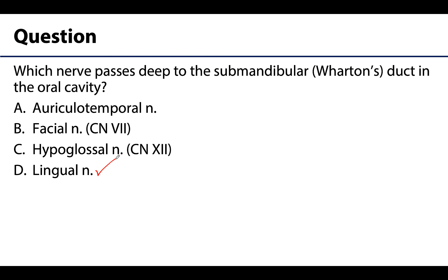For bonus points, what does the lingual nerve do? This was covered in another video — think about what it innervates. It provides general sensory innervation for the tongue anterior to the vallate papillae. Importantly, it also carries fibers of the chorda tympani, which include pre-ganglionic parasympathetic fibers that hitchhike on it to reach the submandibular ganglion. So the lingual nerve is important in the innervation pathway for the submandibular gland — not the source of innervation, but part of that pathway.